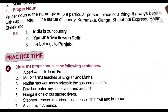Mrs. Sharma teaches us English and Math. Mrs. Sharma is the name of a person, so this is a proper noun. English and Math are subject names — that's why these are also proper nouns. Radha has won many prizes in the quiz competition. Radha is the name of a person — toh this is also a proper noun. Ravi has eaten many chocolates and biscuits. Ravi is a person's name, so Ravi is a proper noun. Like this, you will do all the exercise.